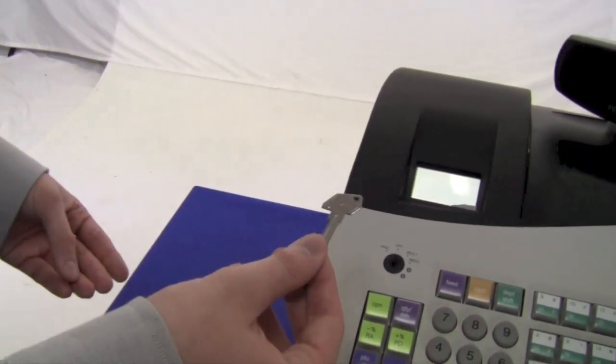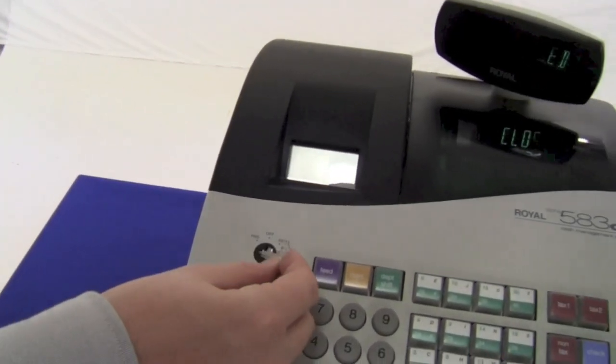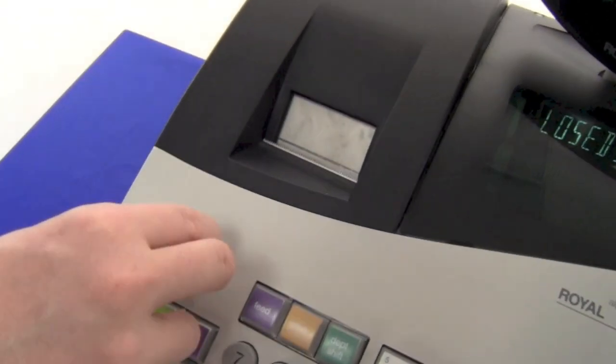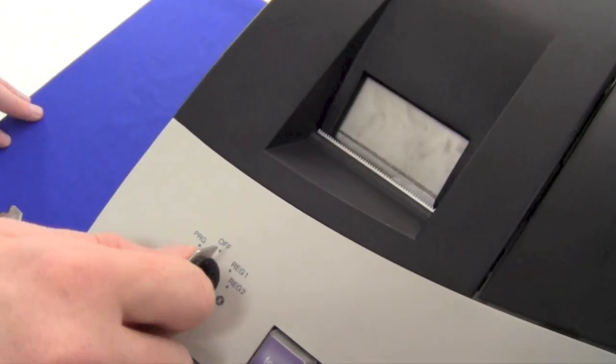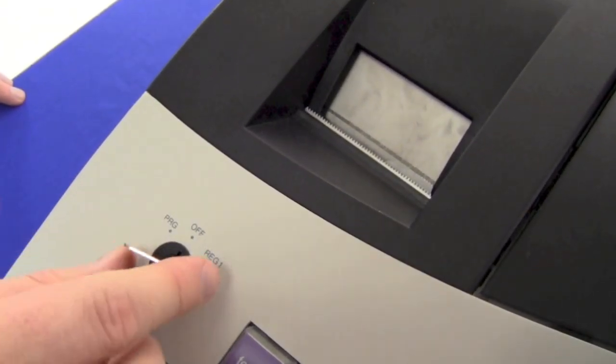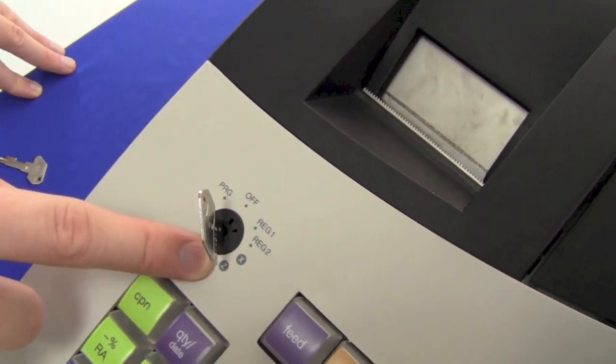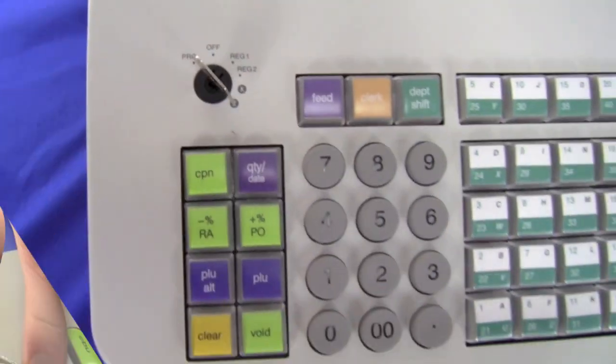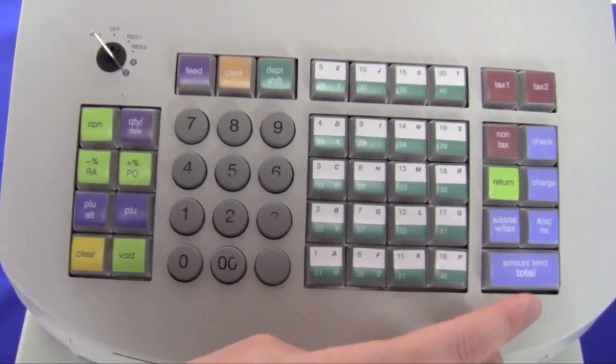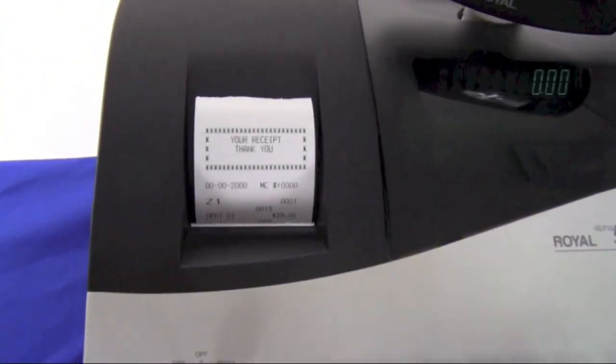The next key is the Z key. It cannot be used for programming. However, it can use the register functions. Its main function is the Z setting. This helps run management reports such as end-of-the-day reports.